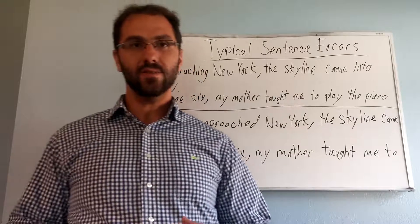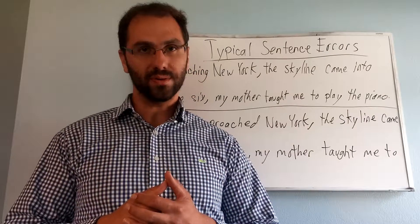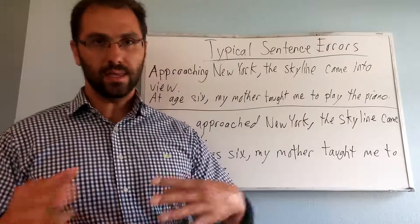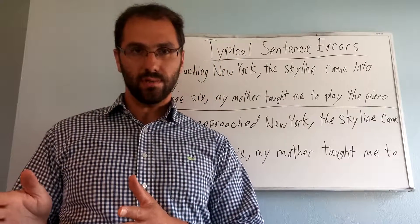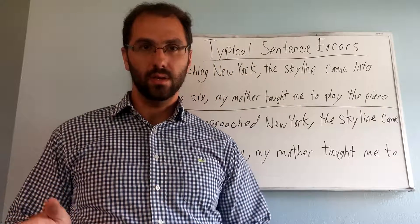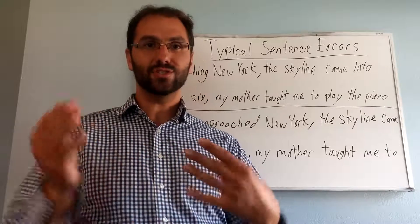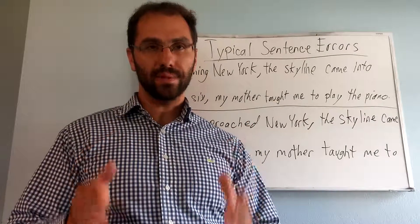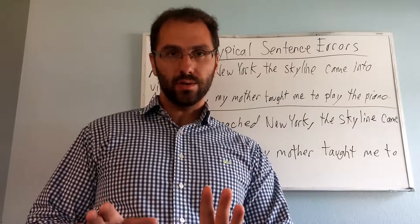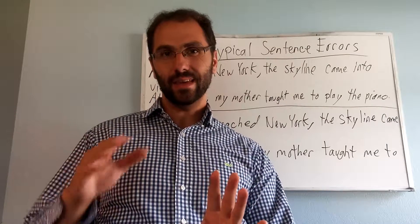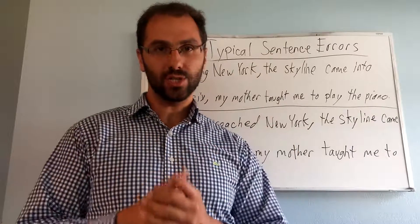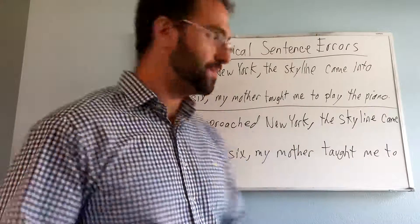A typical sentence error is a dangling participle. A participle is a verb ending in -ing and it's used in the form of a subordinate clause. We want to avoid constructing a sentence in this manner because when a reader looks at the sentence, it'll take them a little time to figure out what's exactly going on. Instead, we want to restructure the sentence itself.